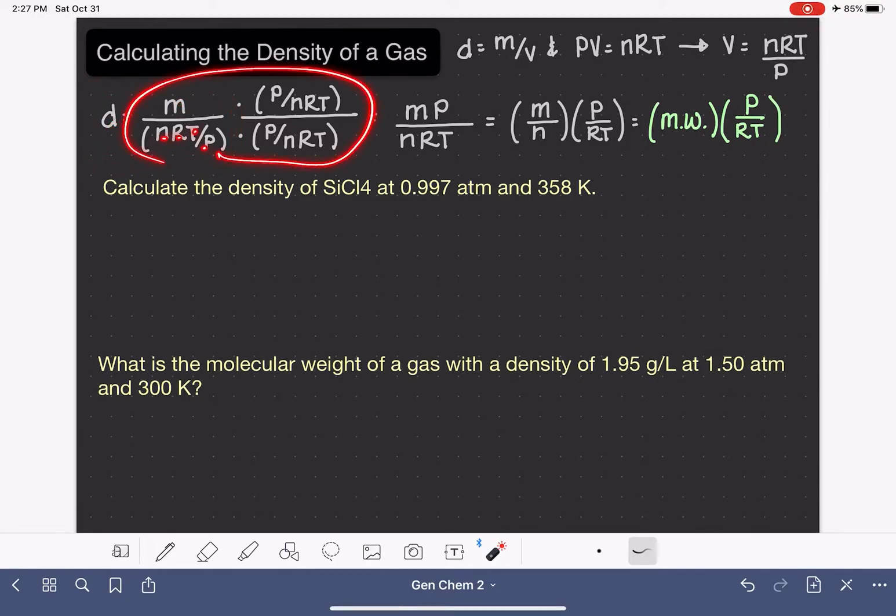I'm going to clean this equation up by multiplying the top and the bottom by the inverse of nRT over P. So I'm multiplying both the top and the bottom by P over nRT. That cancels this portion of the equation out.